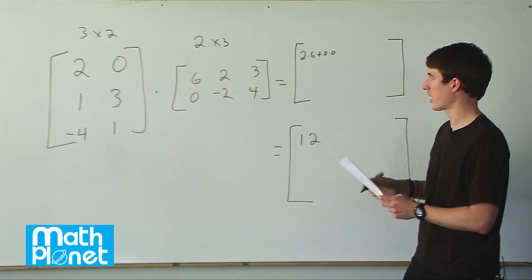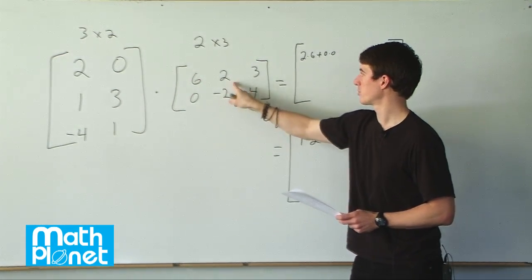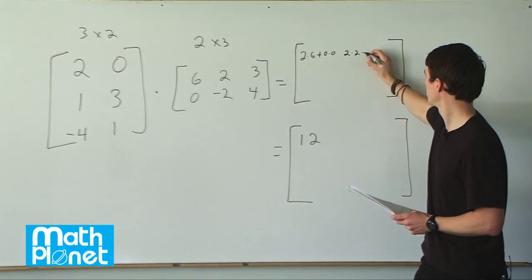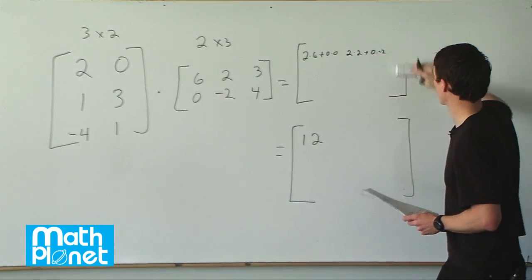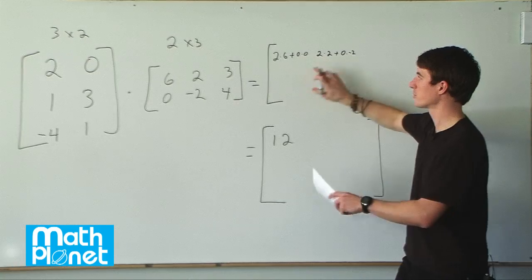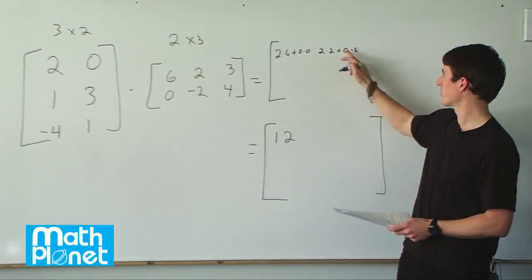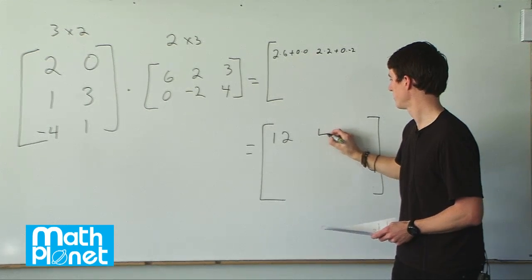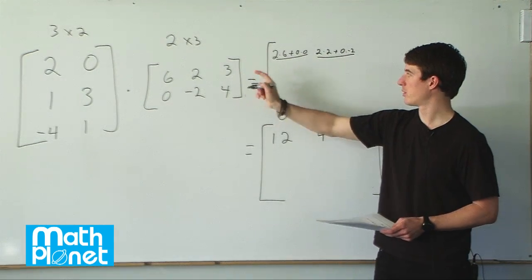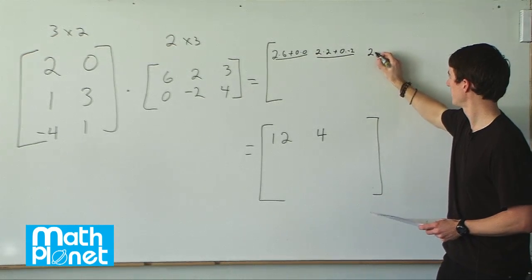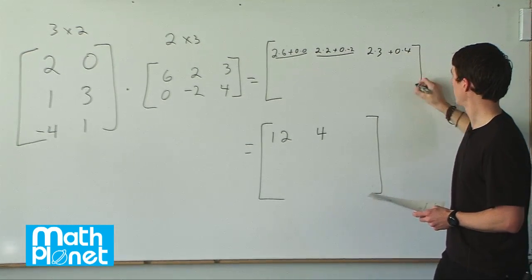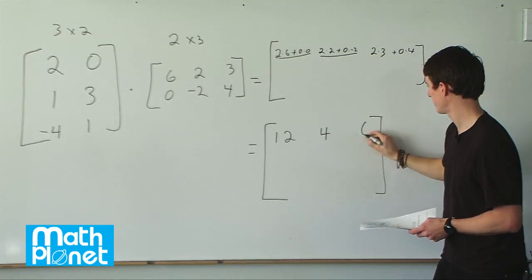For the second spot, we're going to have this row times this column: 2 times 2 plus 0 times negative 2. That's 0, so 2 times 2 is 4. Moving on to the first row, third column: 2 times 3 plus 0 times 4. That 0 term is 0, and 2 times 3 is 6. So we're already done with one row.